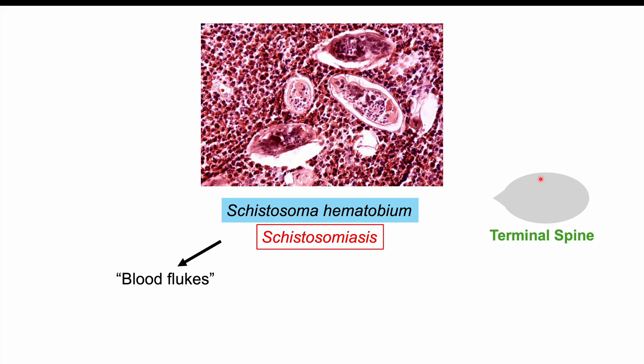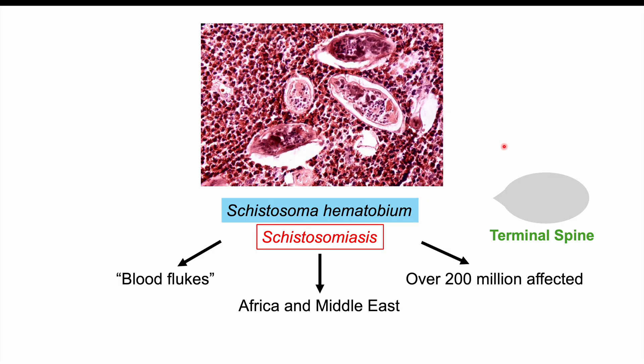These Schistosoma parasites are parasitic flatworms, or trematodes, also known as blood flukes. This particular species, Schistosoma hematobium, is found in African countries — mostly sub-Saharan Africa — and also in the Middle East. Overall, it's estimated that over 200 million people are affected with Schistosomiasis, and up to 700 million people are at risk.